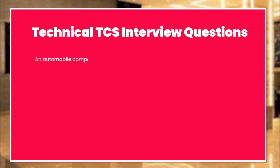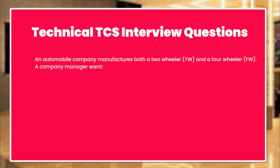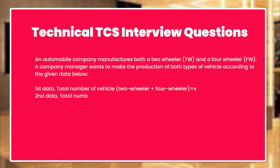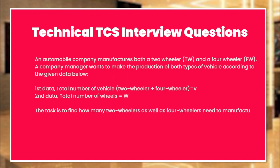An automobile company manufactures both a two-wheeler and a four-wheeler. A company manager wants to make the production of both types of vehicles according to the given data: 1. Total number of vehicles, 2. Total number of wheels. The task is to find how many two-wheelers as well as four-wheelers need to be manufactured as per the given data.